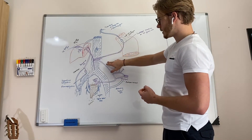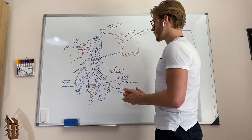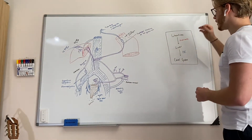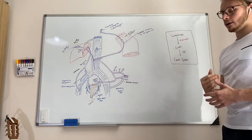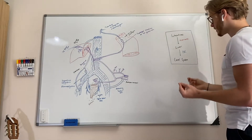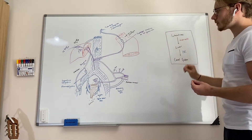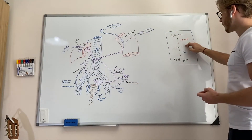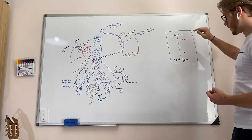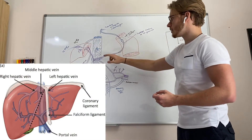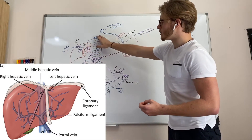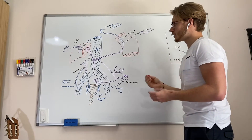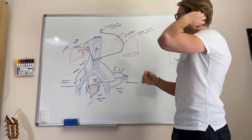In purple is the portal system and in blue is the caval system. The portal system is basically responsible for collecting all the venous blood from the intestines with all the nutrients inside it. It collects this blood and transports it to the liver, where it then goes into the caval system, into the IVC through the hepatic veins. This is the hepatic portal vein — it goes into the liver and is then drained by the hepatic vein.